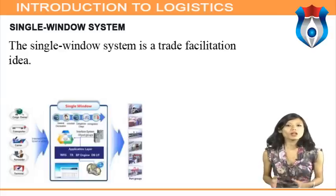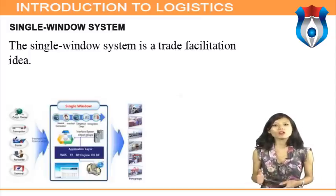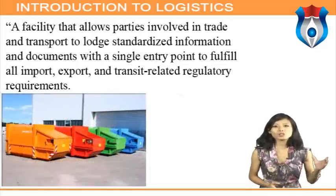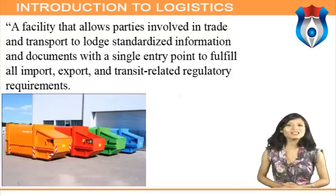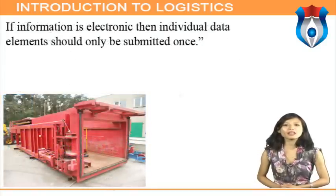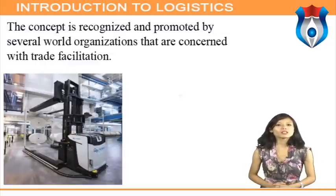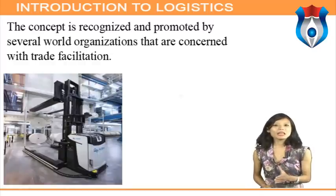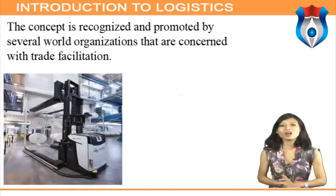The single window system is a trade facilitation idea. Implementation of a single window system enables international cross-border traders to submit regulatory documents at a single location or entity. A common definition is: a facility that allows parties involved in trade and transport to submit standardized information and documents with a single entry point to fulfill all import, export, and transit-related regulatory requirements. If information is electronic, individual data elements should only be submitted once. This concept is promoted by several world organizations including UNECE and UN/CEFACT, the World Customs Organization (WCO), SITPRO Limited of the United Kingdom, and ASEAN.